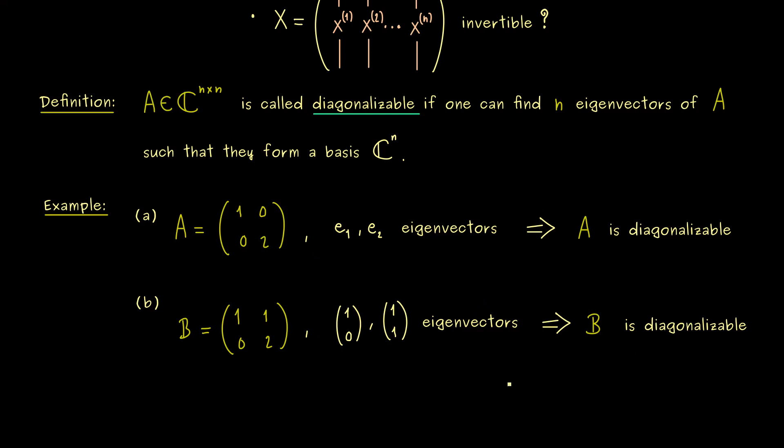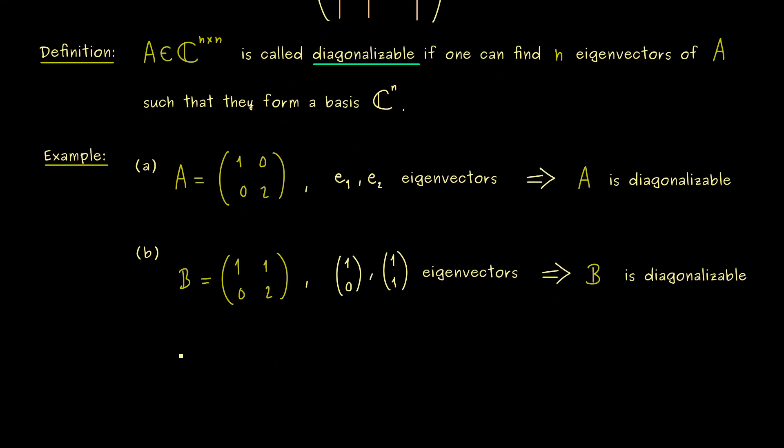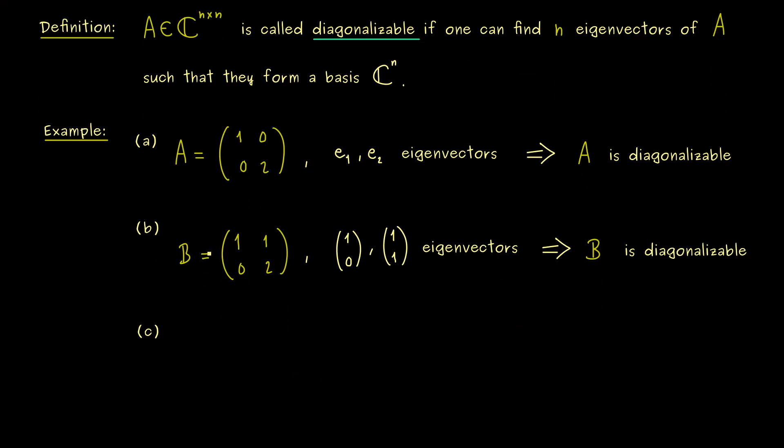And a good exercise here is to write down the matrix X and the matrix D for this case. It's not so complicated and then you can check that you can actually transform B into diagonal form.